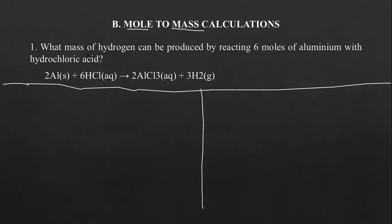They've asked: what mass of hydrogen can be produced by reacting 6 moles of aluminium with hydrochloric acid? First, ensure the equation is balanced. For mole-to-mass, you first treat it as a mole-to-mole calculation to find the moles of hydrogen using the 6 moles of aluminium given. Then you convert those moles to mass. You cannot directly find the mass without first knowing the number of moles.